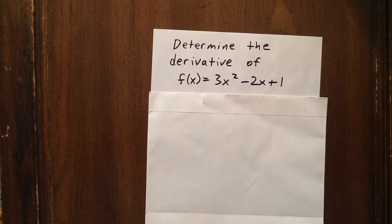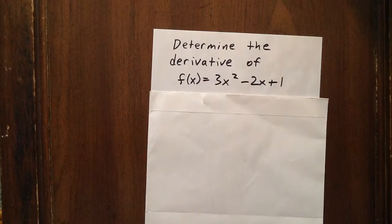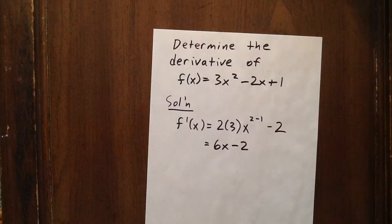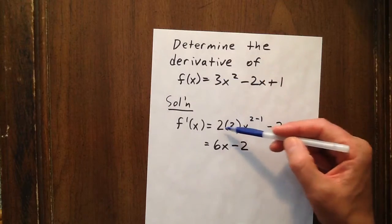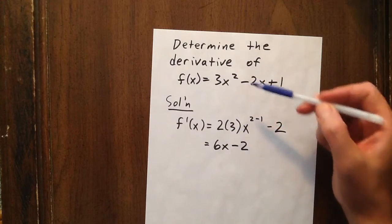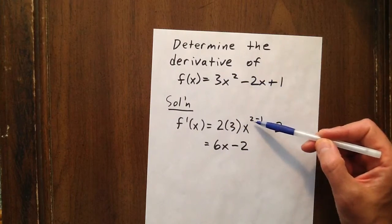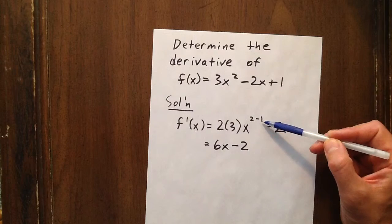In this question we're going to use the power rule to determine the derivative of 3x squared minus 2x plus 1. All we have to do is multiply 2 times 3 and then subtract 1 from our exponent.